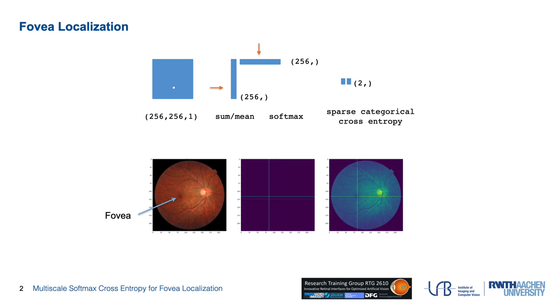Two coordinate vectors, representing x and y axes, are obtained with a reduction operator, such as sum or mean. The final fovea coordinates can then be calculated with two sparse categorical cross-entropy losses, respectively.